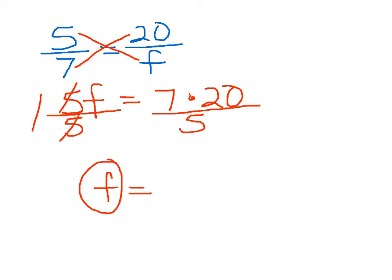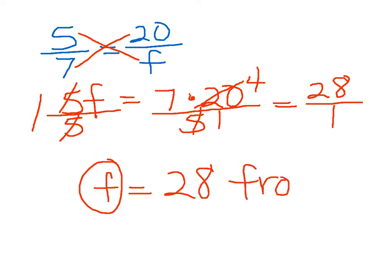We can simplify this problem by canceling. So we can see that both 20 and 5 are divisible by 5. 20 divided by 5 leaves us with 4, 5 divided by 5 equals 1. We can do the multiplication problem: 7 times 4 equals 28 divided by 1, which equals 28. F equals 28. There are 28 frogs in the ratio of salamanders to frogs.